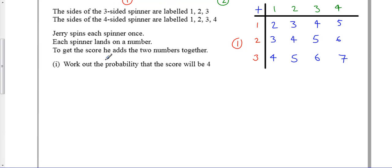There's 12 options in the diagram, and there's 1, 2, 3 of them are 4s. So the probability of a 4 is 3 out of 12, which is 1 out of 4.